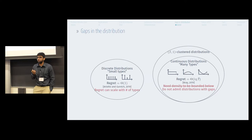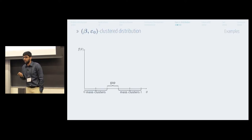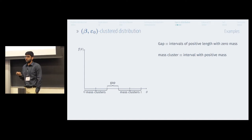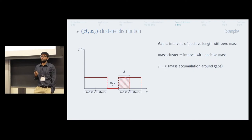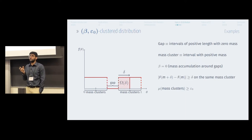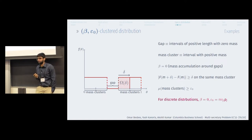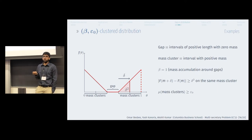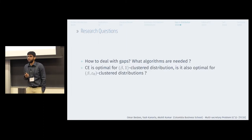Now, how do you generalize to deal with gaps? We generalize the beta-1 cluster distribution to beta-epsilon-naught cluster distributions. Think of partitioning the ability space into mass clusters and gaps, where gaps are intervals of positive length with zero mass, and mass clusters are intervals with positive mass. Beta characterizes the rate at which mass accumulates around gaps, and epsilon-naught is the probability mass on the smallest mass cluster. For discrete distributions, they belong to the zero-epsilon-naught clustered class, where epsilon-naught is the smallest probability mass on the support.